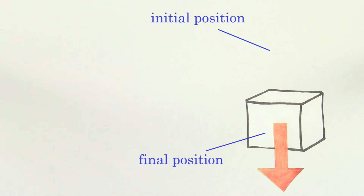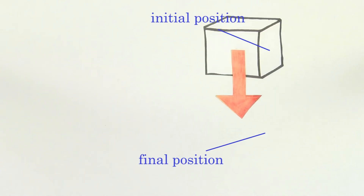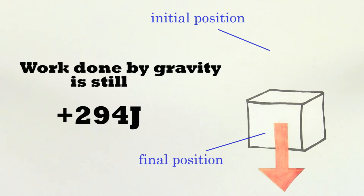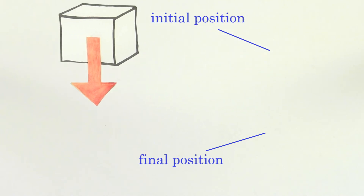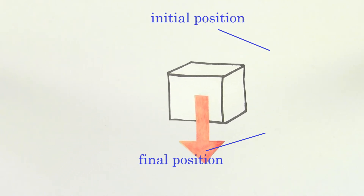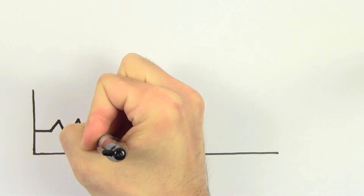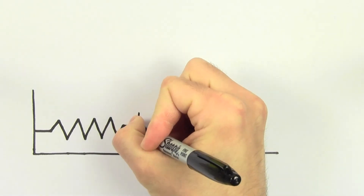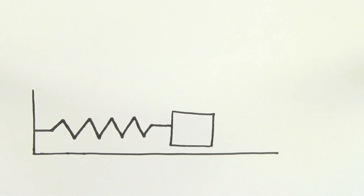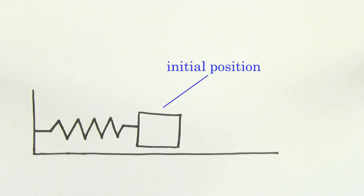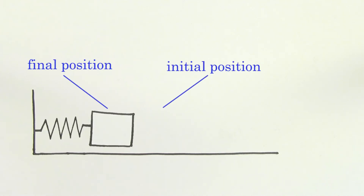In fact, you could allow the mass to take any path from the initial point to the final point, and the work done by gravity is still just going to be 294 joules. Because the work done by gravity doesn't depend on the path taken, we call gravity a conservative force. The force exerted by a spring is another example of a conservative force. The total work done on a mass by a spring does not depend on the path taken by the mass — it only depends on the initial and final positions of the mass.